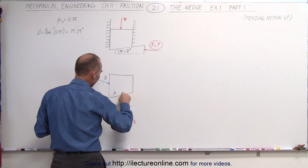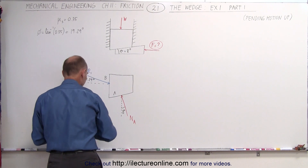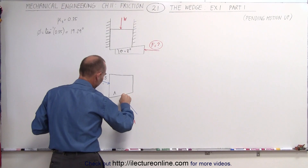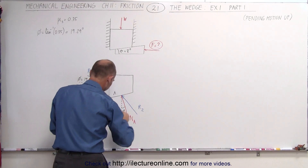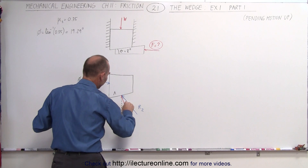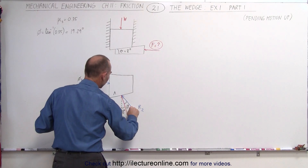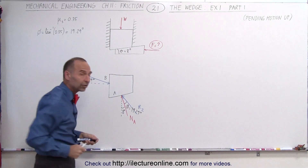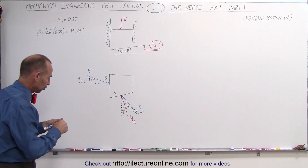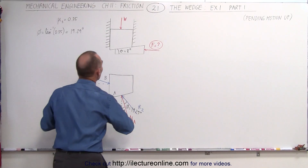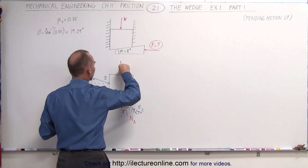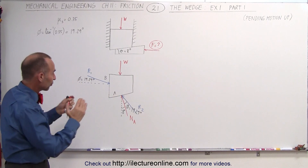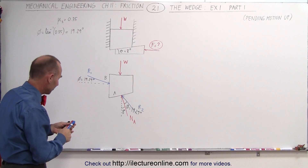We'll have a reaction force here — let's call that R2. We have to add both of those angles together to find the direction of R2. We still have the weight of the block pushing downward, which allows us to set up a diagram of the three forces involved.